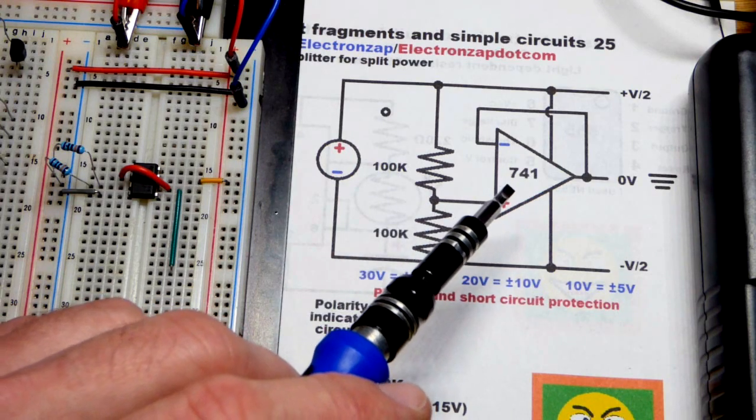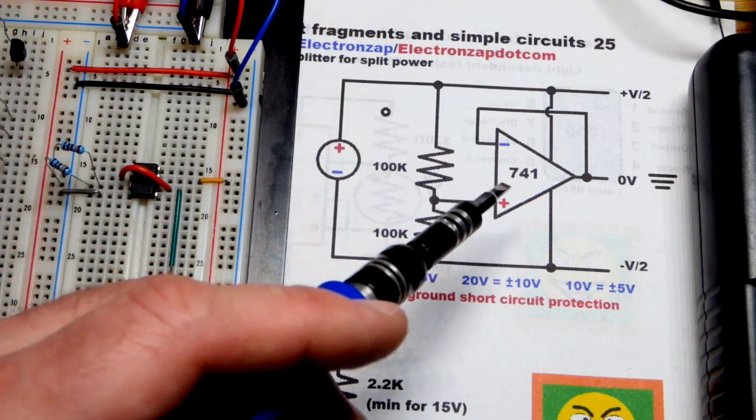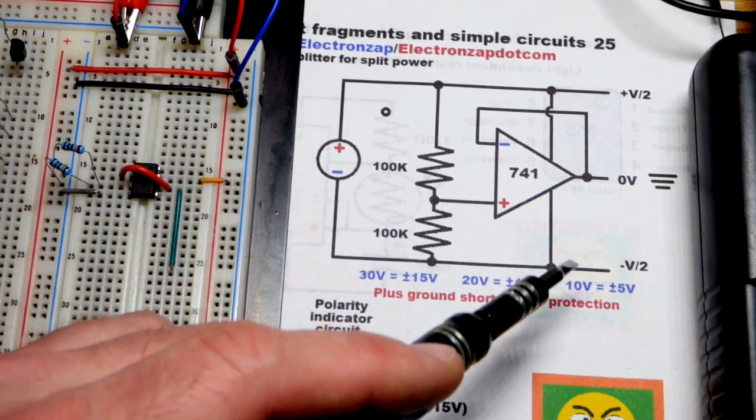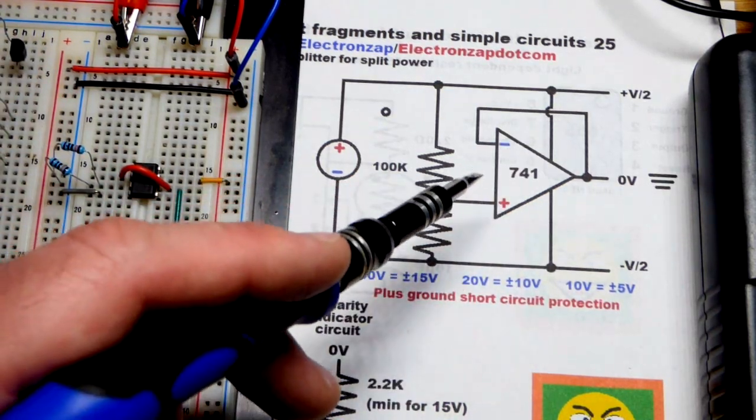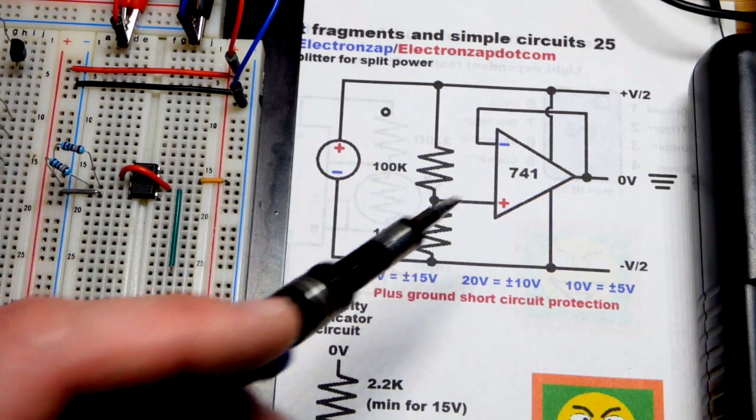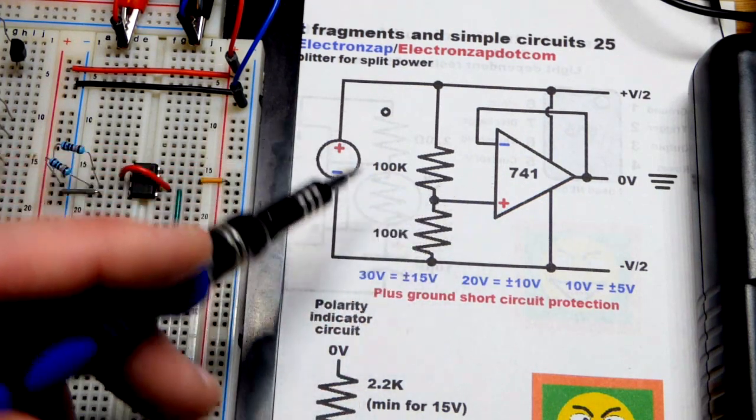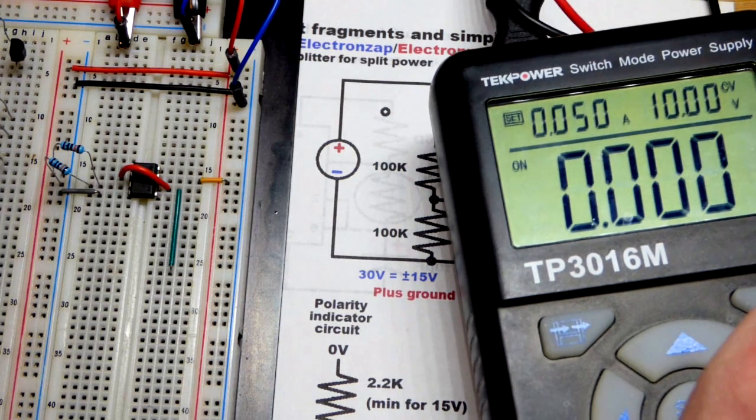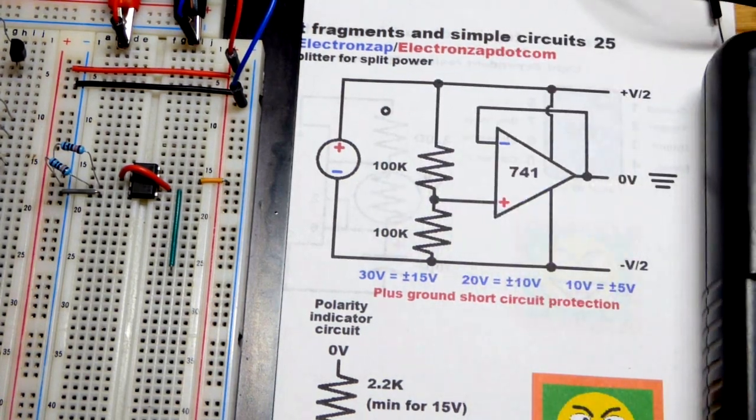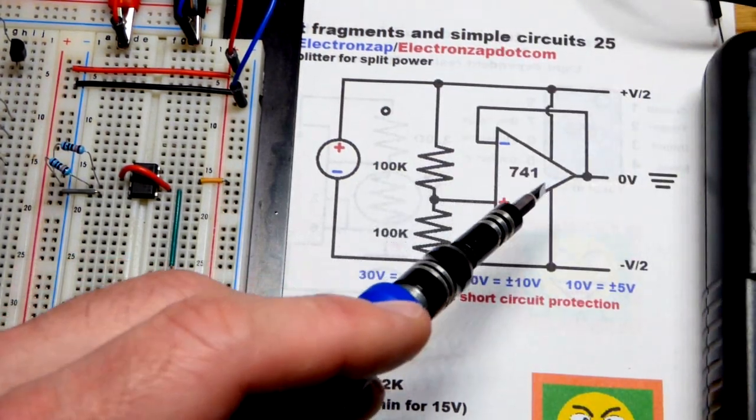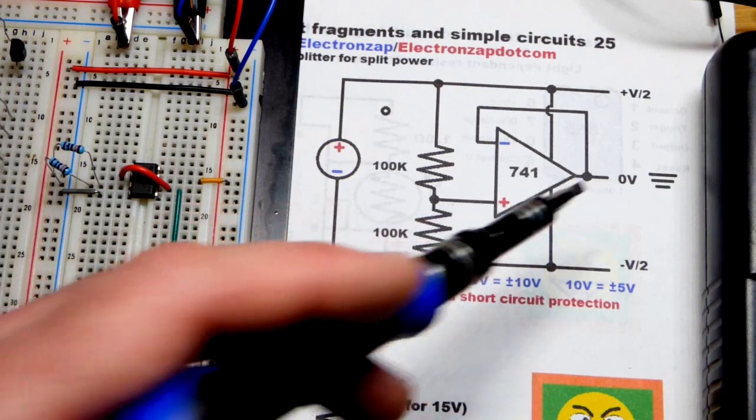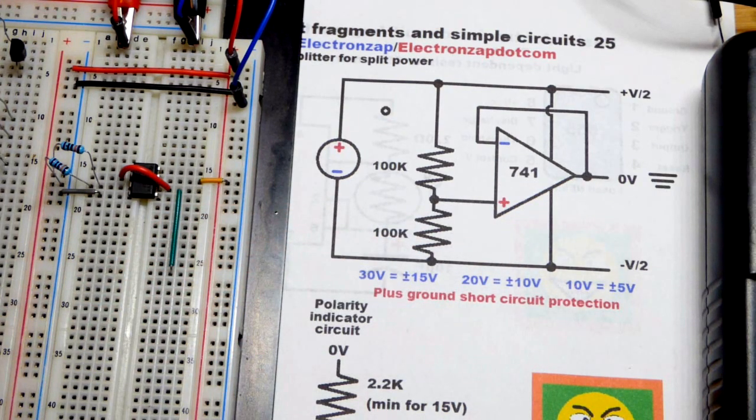The problem that most people will encounter is you need a split power supply to really use them properly. Luckily, since DC supplies are so common, you can take one of those 741 op amps and split the supply with just this basic circuit.